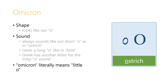The letter omicron is shaped to look just like our O, both in the uppercase and in the lowercase. The sound is always a short O sound, as in ostrich. It's never a long O like in hole. Greek does have another letter for the long O sound, but we'll learn it later because it looks a little bit funny. Omicron literally means little O — mikro is an adjective meaning little, and O is at the beginning, so this is the omicron, the little O.